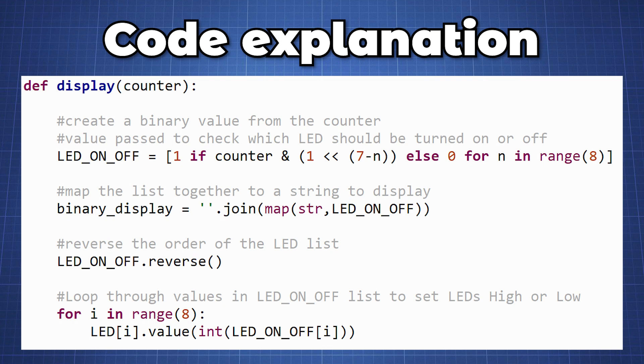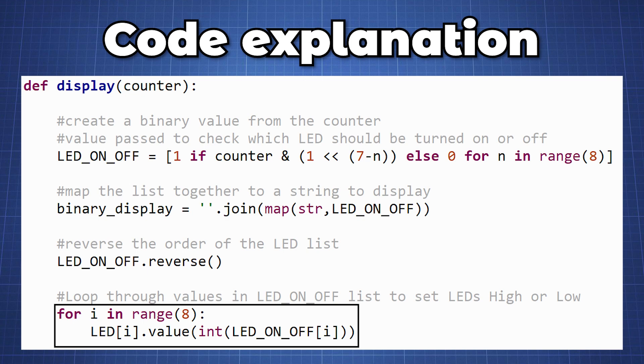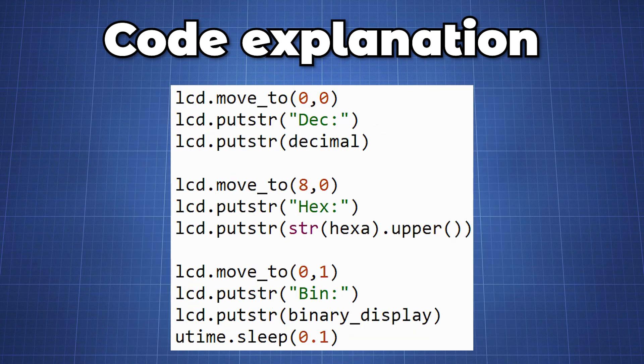The display function will control the LCD and what we display to it. We create an 8-bit binary digit from the counter and store it in a list LED_ON_OFF. We map this list to a string to be displayed to the LCD, and then loop through the LED_ON list to set the LEDs high or low depending on the counter value. We then convert the counter to a hexadecimal value and do some basic formatting for the denary value. Then using the LCD library methods we write all the information to the LCD screen.